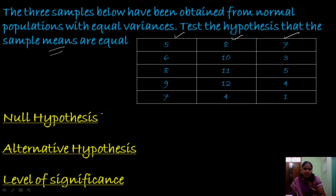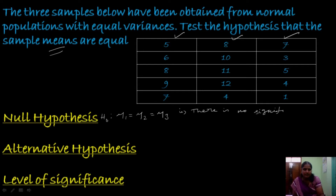The null hypothesis is also represented as H0. We have to set up the null hypothesis as there is no significant difference between the means of three samples. That is, mu1 is equal to mu2 is equal to mu3. In words, we write it as there is no significant difference between the means.